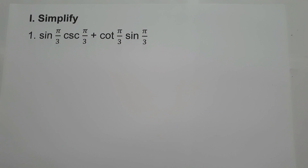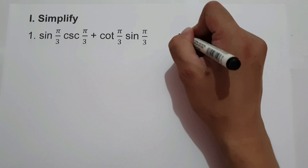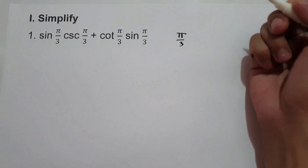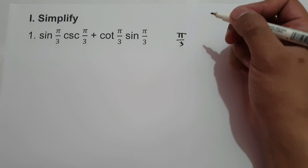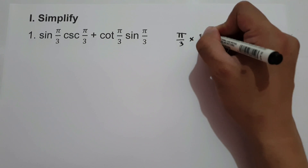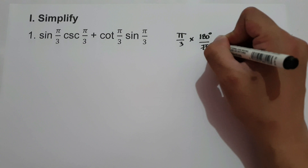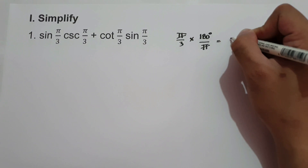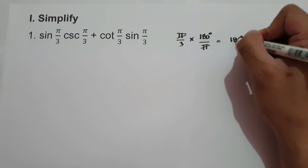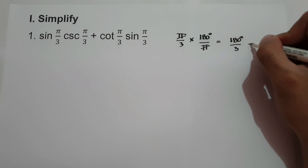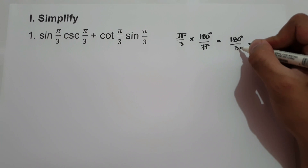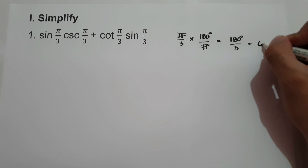To find the exact value of the given trigonometric expression, let us convert the given radians to degrees. That is pi over 3. To convert this into degrees, let us multiply by 180 degrees over pi, and cancel pi. That gives us 180 degrees over 3, which is 60 degrees.